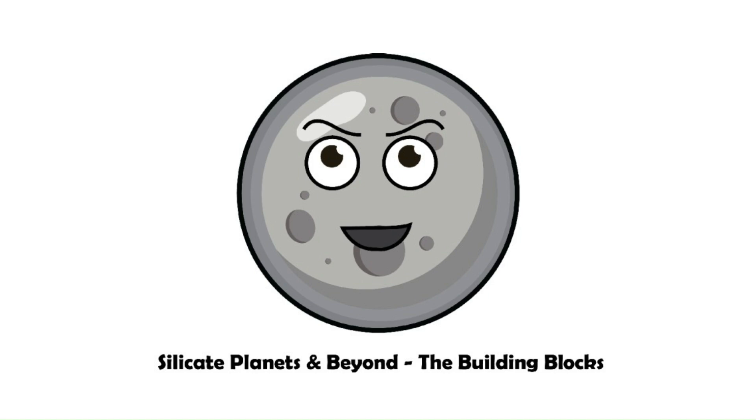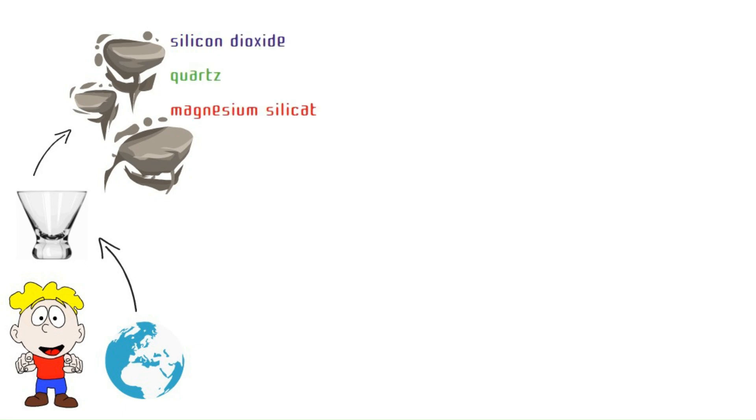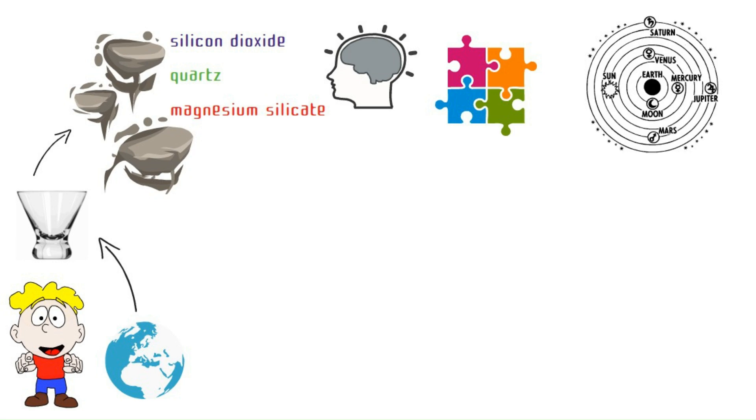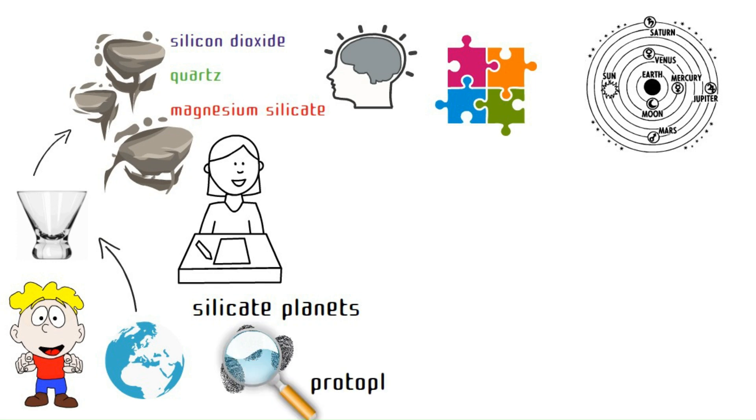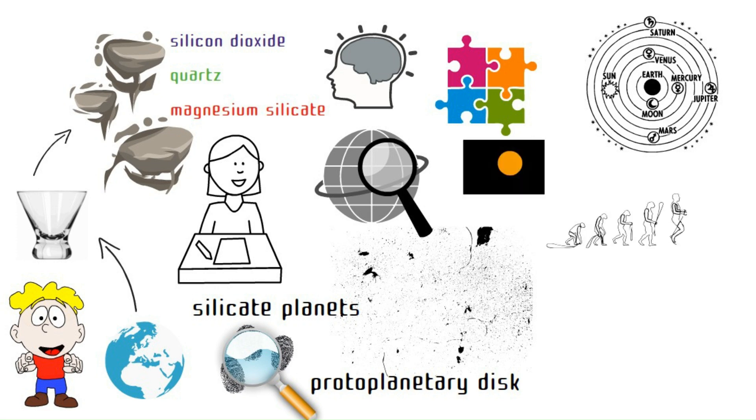Silicate planets and beyond. The building blocks. Most planets, including Earth, are composed primarily of silicate minerals. These are rock-forming compounds like silicon dioxide, quartz, and magnesium silicate. Understanding these silicate planets helps us piece together the formation of our own solar system and the early stages of planet building. Studying the composition of silicate planets can reveal clues about the conditions that existed in the protoplanetary disk, the swirling cloud of gas and dust from which our solar system was formed. By analyzing the types and ratios of silicate minerals found on different planets, we can start to understand how planets differentiate and evolve over time.